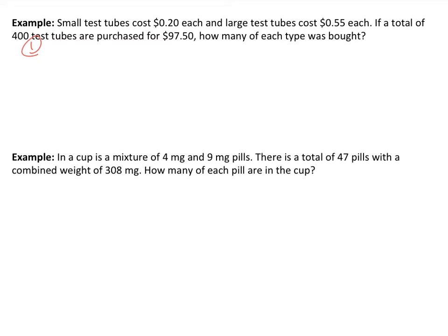In this particular case, we don't know the number of small test tubes — I'm going to abbreviate TT for test tubes — and we also don't know the number of large test tubes purchased. You want to be really specific here. Don't just write 'small test tubes' or 'large test tubes.' You have to say the number of small test tubes purchased. So I'm going to let X equal the number of small test tubes purchased, and Y equal the number of large.